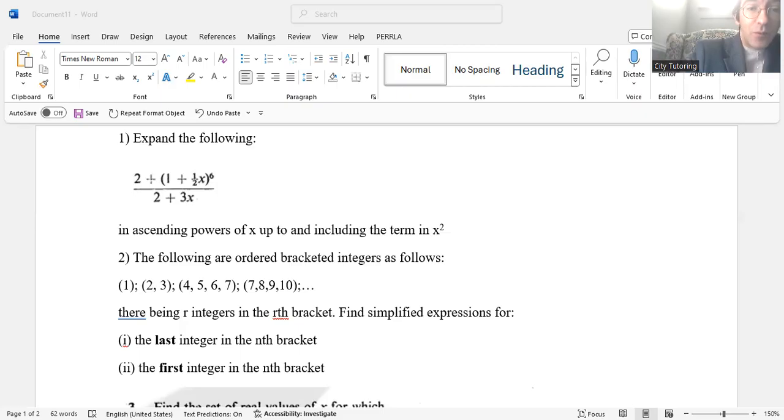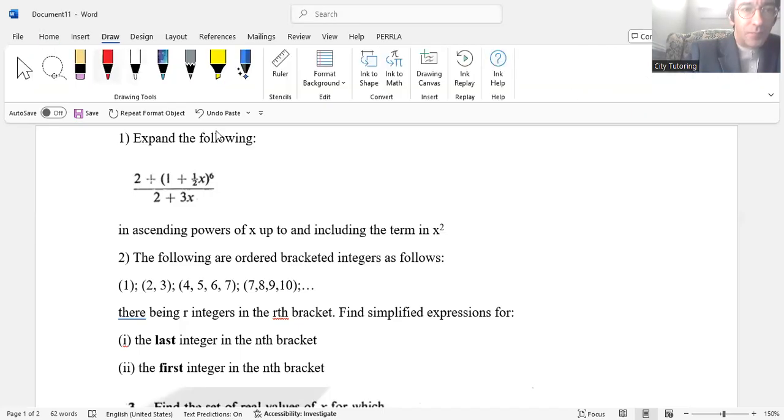Let's have a look at question one. It says expand the following: the expression is 2 plus (1 + (1/2)X) raised to the sixth exponent in the numerator, and in the denominator you have 2 + 3X. Expand in ascending powers of X up to and including the term in X squared. This was very poorly done. In fact, many candidates assumed that (1/2)X in parentheses squared is the same as (1/2)X squared.